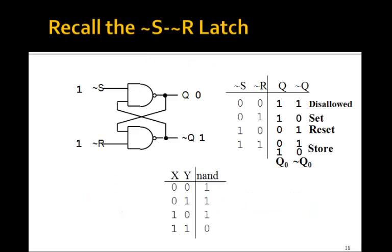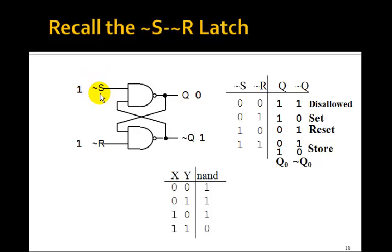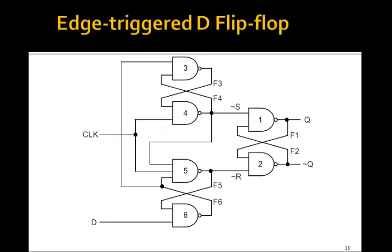In general, we would like to have the change take place on the rising edge of the clock. Let's recall how the NOT-S NOT-R latch works: the store state is when both inputs are 1. To set it, we bring NOT-S low and then back high — it stays set. To reset it, we bring NOT-R low and back high. Now let's look at this more complicated circuit — my claim is this is an edge-triggered D flip-flop. We're going to call flip-flops things that change on the rising edge of the clock.